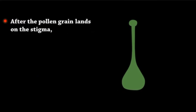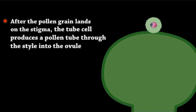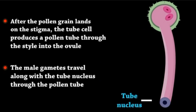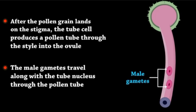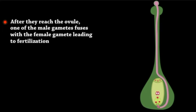After the pollen grain lands on the stigma, the tube cell produces a pollen tube through the style into the ovule. The male gametes travel along with the tube nucleus through the pollen tube. After they reach the ovule, one of the male gametes fuses with the female gamete, leading to fertilization.